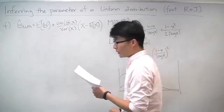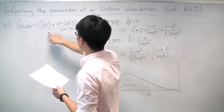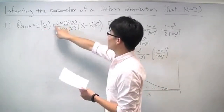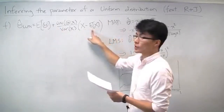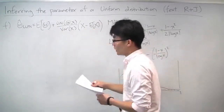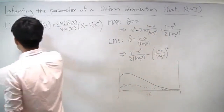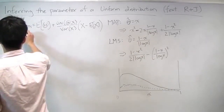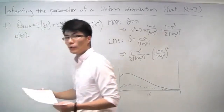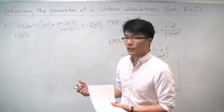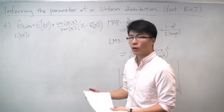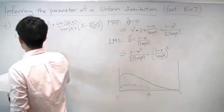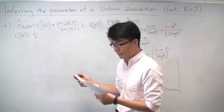To compute this, we need four things: the expectation of theta, the covariance, the variance, and the expectation of x. Expectation of theta is the easiest — theta is uniformly distributed between 0 and 1, so the expectation of theta is just 1/2.